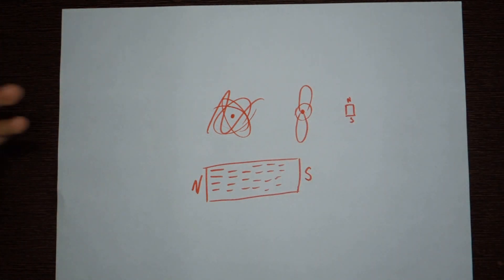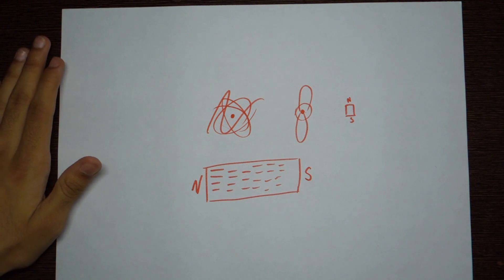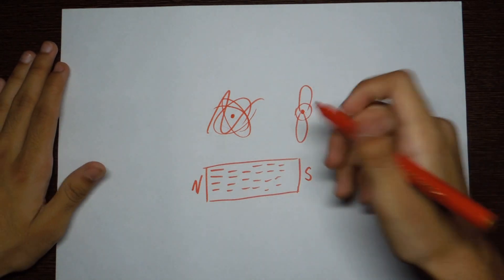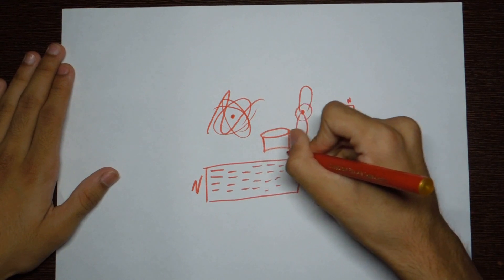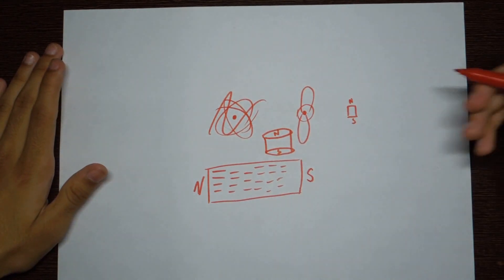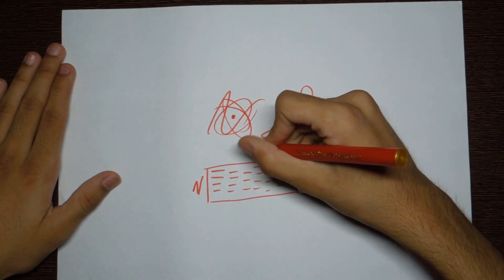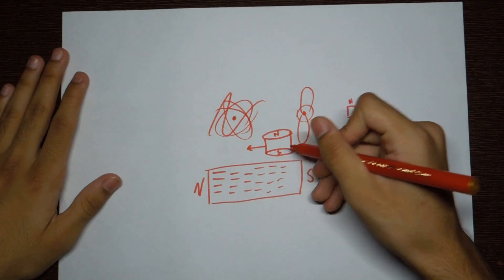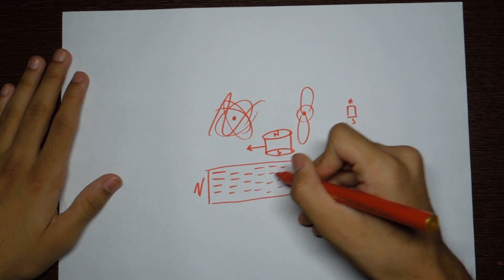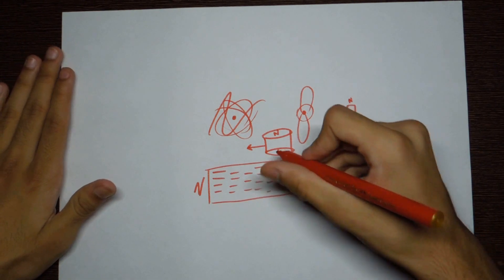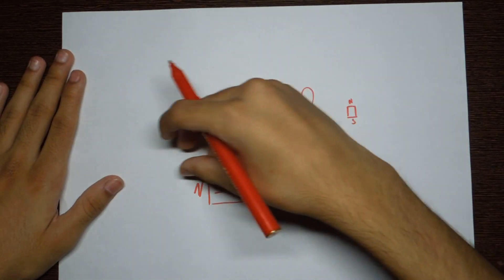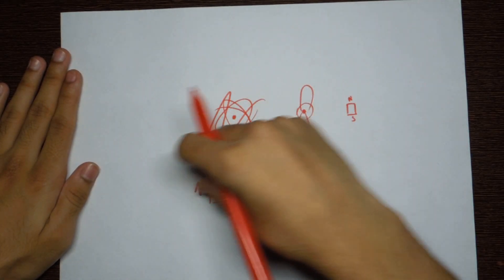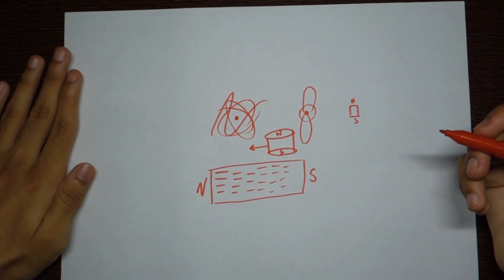How can you make the atoms point in one direction? The way to do it is to rub it with another magnet. Suppose you have another permanent magnet with a north pole and a south pole, and you rub the magnet on this material in one direction. Since opposite poles attract, the south pole will attract the north poles of each of these little tiny magnets in this material — each of these atoms. By rubbing this permanent magnet on a piece of iron, you're pulling all of these north poles in that direction to align all of them in one direction, and so you'd be magnetizing this material.